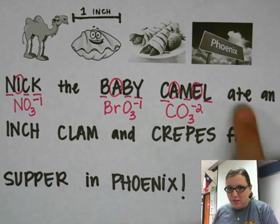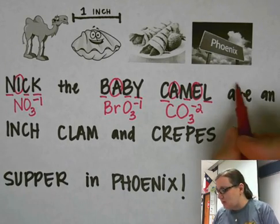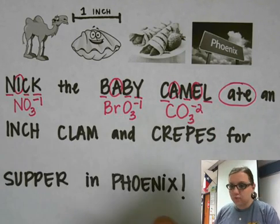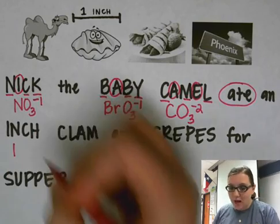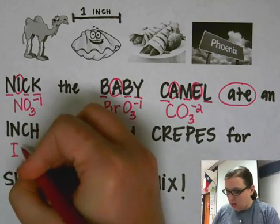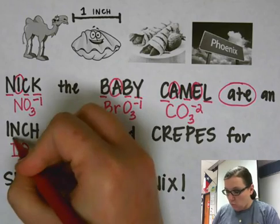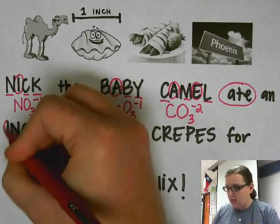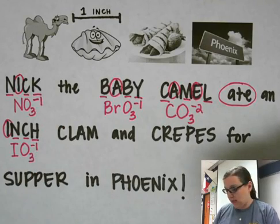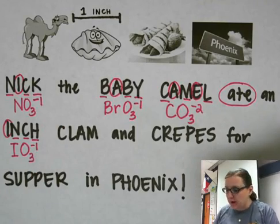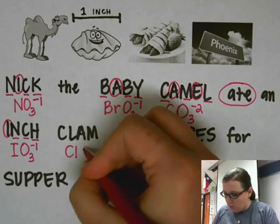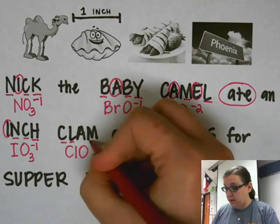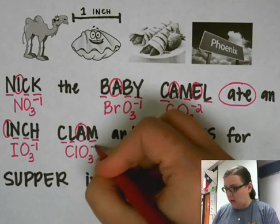Now, 'ate' is kind of a filler word, but it's actually helpful because it reminds us that these are all the '-ate' polyatomic ions. 'N' is for iodate — so we have iodine, and three O's for the three consonants, and a negative one charge from one vowel. 'Clam' is for chlorate — ClO — three consonants and one vowel, so negative one.